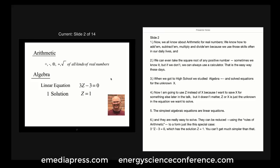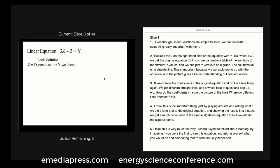The simplest algebraic equations are linear equations, and they are really easy to solve. They can be reduced using the rules of arithmetic to a form like this special case: 3Z minus 3 equals 0, which only has one solution, Z equal to 1.